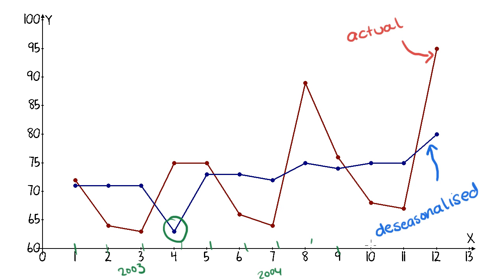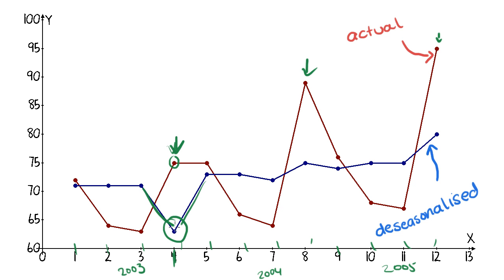Looking at quarter four: 2003 had quarters one, two, three, four; 2004 the same; and 2005 the same. The point at x equals 4 corresponds to quarter four of 2003. De-seasonalized, it was actually very low relative to the overall trend. Even though raw sales looked up — perhaps due to Christmas — their de-seasonalized sales were actually quite low that period. That's the kind of insight de-seasonalizing can provide.